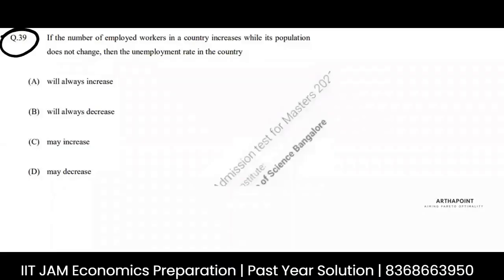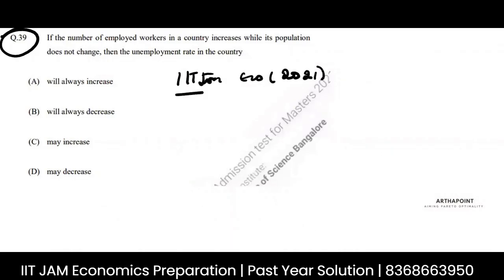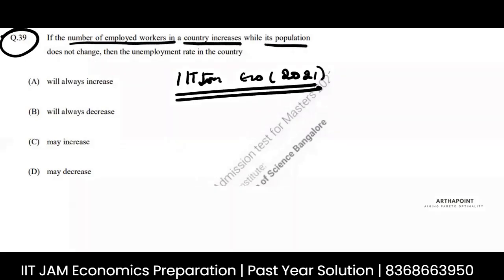This is question number 39 of IIT Jam Economics 2021 paper. The question asks: if the number of employed workers in a country increases while its population does not change, what happens to the unemployment rate in the country?